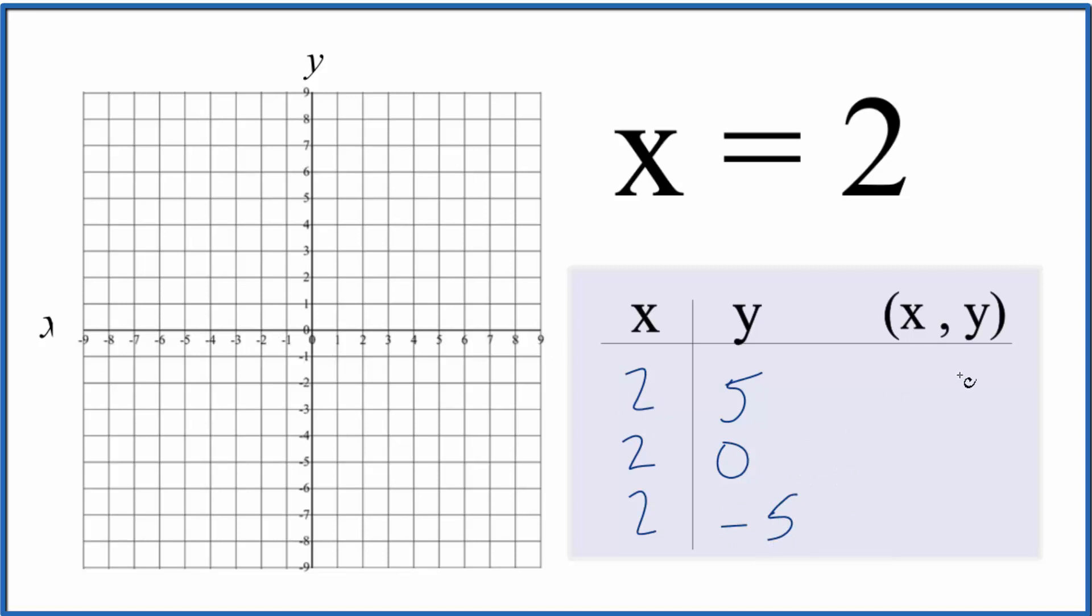And then we can graph these points. We could have chosen other numbers, and they'd also be on the line x equals 2. So we go to x is 2, y is 5. So 2, and then y is 5.